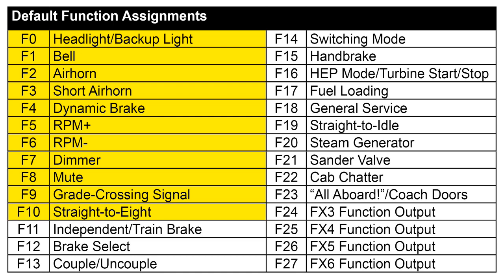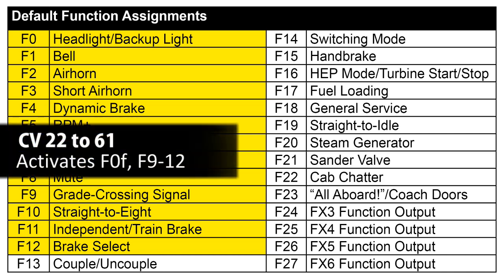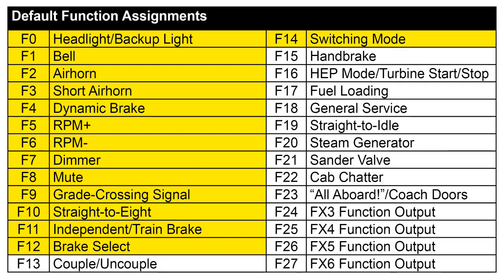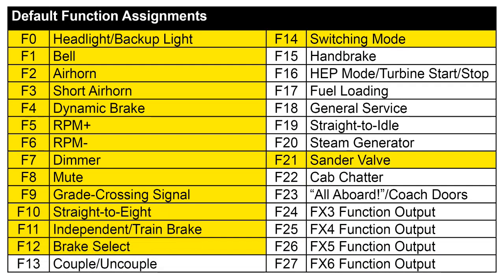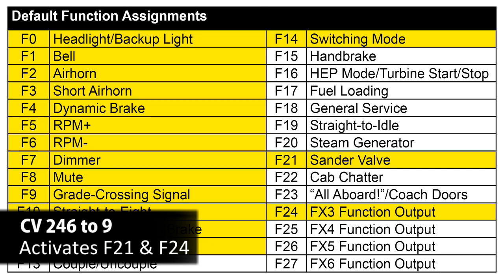F10 is straight to 8, so we want to grab a little extra power with a push of a single button when pulling the train out of the yard — we'll enable F10. F11 is the brake application, and F12 toggles between independent and automatic brake, so we want all of those enabled on the lead locomotive. Going into the higher functions, many relate to servicing the locomotive, so we'll limit those to be active on the lead unit. We're going with F14 for switching mode, F21 for the sander valve, and since this locomotive has a Mars light, we'll also enable F24 for the FX3 lighting effect.